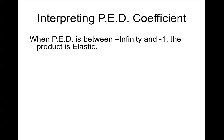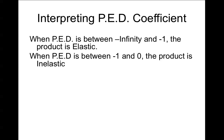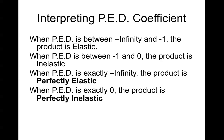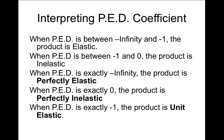To review: when PED is between −∞ and −1, the product is elastic. When PED is between −1 and 0, the product is inelastic. There are three special cases: when PED equals exactly −∞, the product is perfectly elastic; when PED equals exactly 0, the product is perfectly inelastic — people demand the same amount regardless of price; and when PED equals exactly −1, the product is unit elastic, and we'll explore the implications of that in the next lesson.